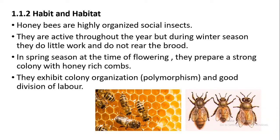Honeybees exhibit colony organization, also called polymorphism. In the adult stage, there are three morphological forms: the queen, the worker, and the drone. These three forms in the adult stage constitute polymorphism, and they have a good division of labor.